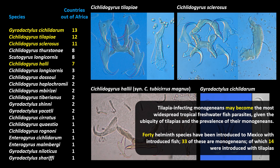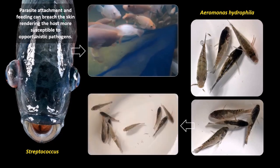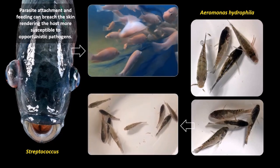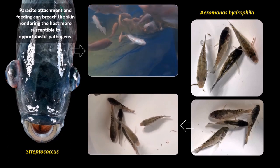In Mexico, of the 40 helminth species that have been introduced, 33 are monogenians and 14 of these were introduced with tilapias. One important point is that while some parasite species are responsible for the direct loss of stocks, parasites also play a key role in facilitating the establishment of secondary pathogens like fungi, viruses and bacteria. Looking at the attachment organ of Gyrodactylus, we can see how the hooks penetrate the epithelium creating holes, and also lots of bacteria on the fish skin. Gyrodactylus infections have been linked to the establishment of serious bacterial pathogens of farm tilapia, including Streptococcus and Aeromonas hydrophila.